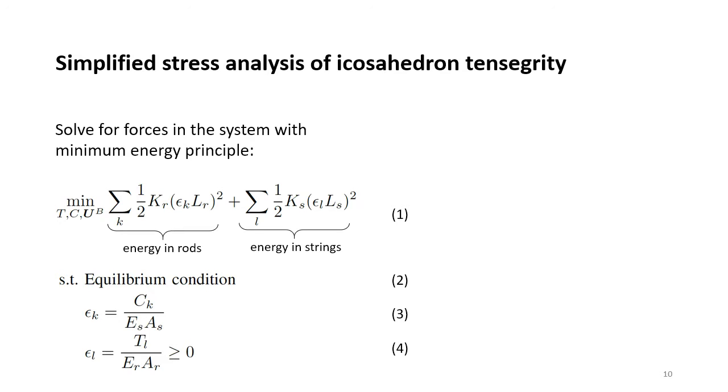We assume that the vehicle is under minimum self-stress and solve the optimization problem formulated here. The cost function is the sum of total potential energy stored in the rods and strings, and we want to minimize this value. The optimization problem is under the constraint that the force equilibrium is met, and we assume that the compression and tension in the members of the tensegrity is following Hooke's law.